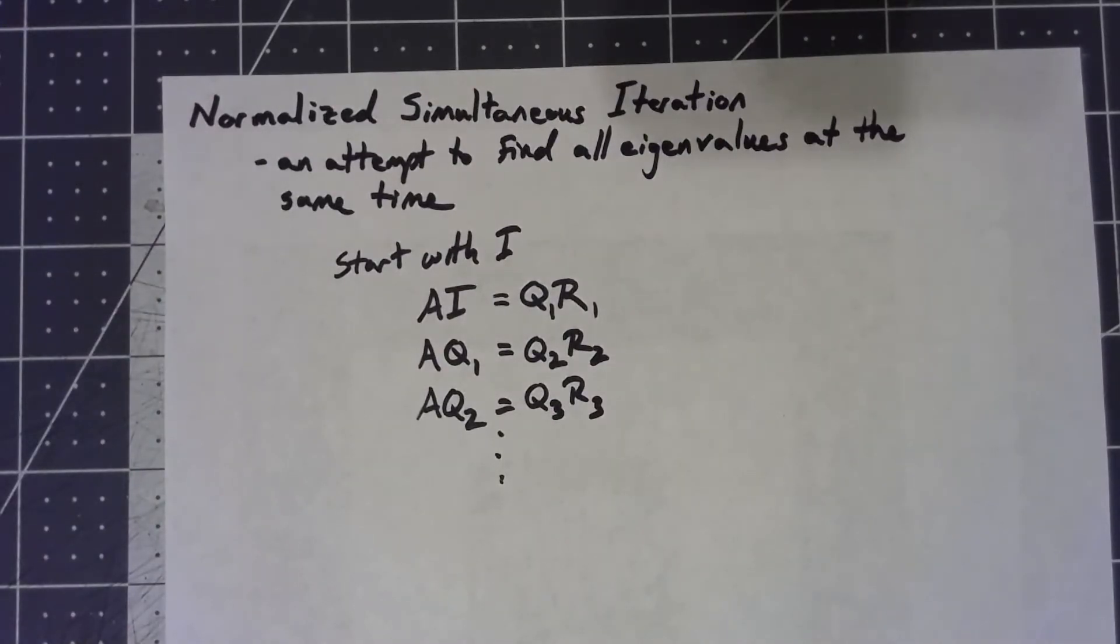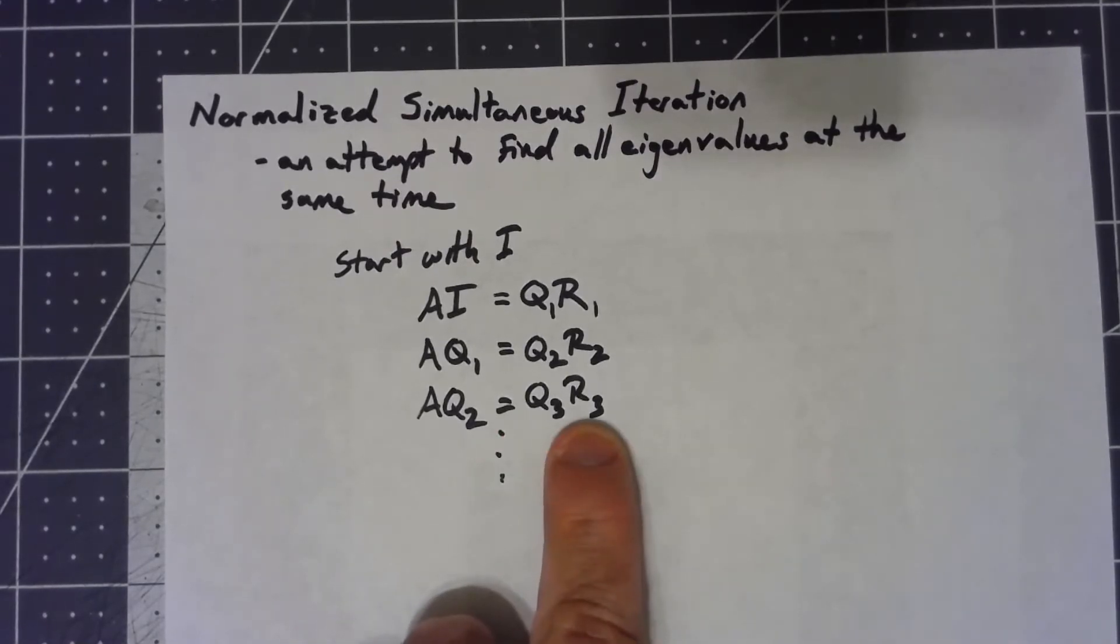Okay, that makes sense. That's easy enough to do, assuming that we can do the QR factorization, and we have a good efficient way of doing that.